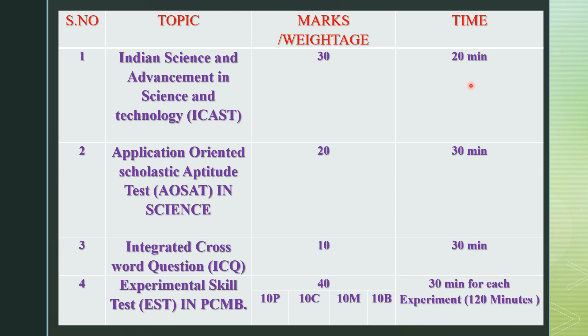The second part is the application-oriented scholastic aptitude test in science — covering all subjects: physics, chemistry, maths and biology. You have 20% weightage and 30 minutes of time. The last part is the integrated crossword question (ICQ). You have 10% weightage and 30 minutes of time.